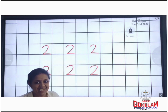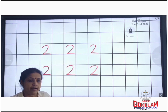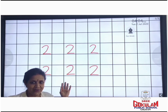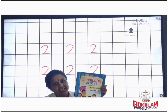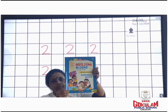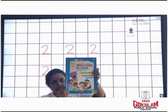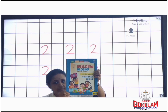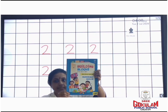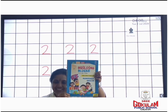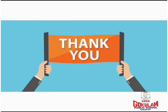Okay children, did you understand about number 1 and 2? Take this book, Building Blocks, Numerous Skills. Do the activities from page number 36 to 39. Okay children, bye. Thank you.